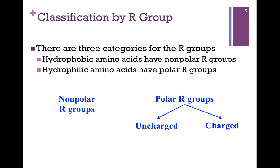We can classify our amino acids by those R groups or side chains. The ones that have non-polar R groups are referred to as hydrophobic. The ones that have polar R groups are hydrophilic. Keep in mind, however, every amino acid is polar — they all have ionizable groups. It only has to do with the nature of that side chain. Within the polar R groups, we can classify them further as being charged or uncharged. We're going to look at the polar amino acids in a later video, but in this one we want to focus on those non-polar groups.